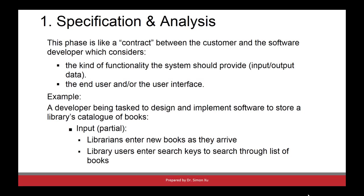The first phase is called specification — in some textbooks it is also called requirement analysis. The documentation of this phase serves as a contract between the customer and the software developer. In this phase, we need to understand what functionalities the system should provide, and a prototype may be involved. We also need to understand what the input and output data are, which data are valid or invalid, who will use the software, and how the user interface will look.